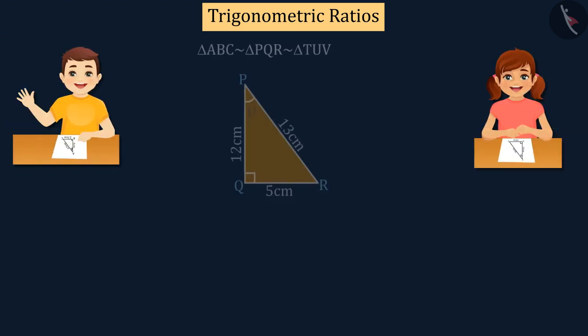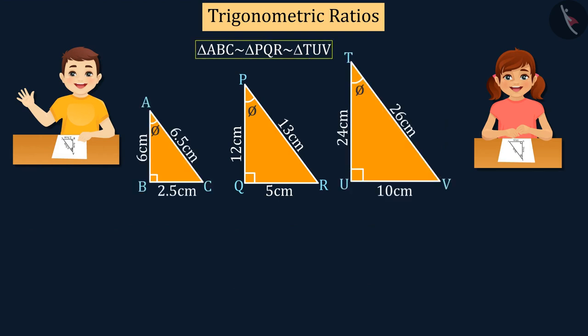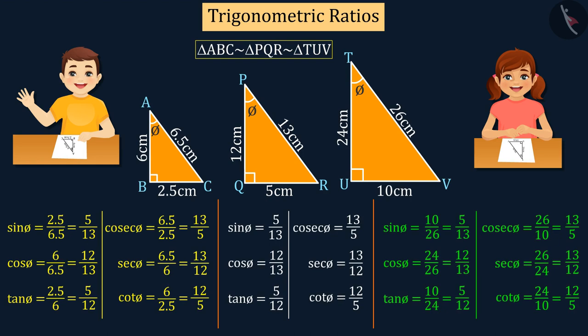Now, Raj and Sonam draw one triangle each, similar to this triangle PQR. In addition, they also write trigonometric ratios for the angle phi in their respective triangles, and find that the value of trigonometric ratios for the angle phi in all three triangles is the same.